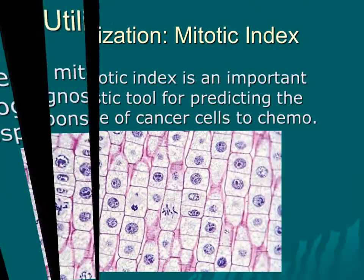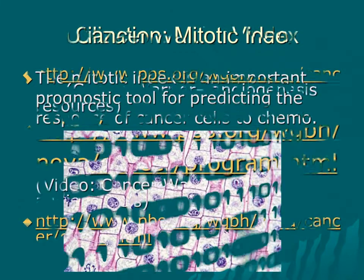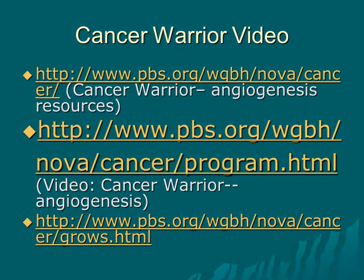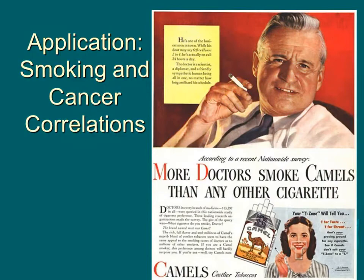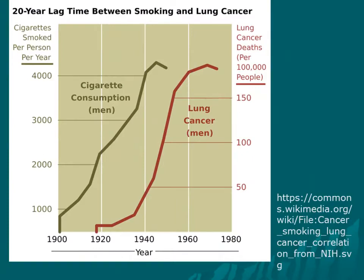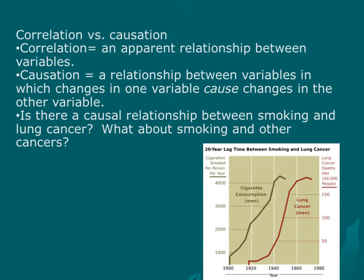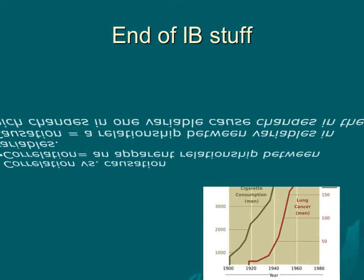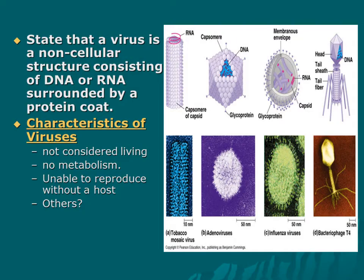Pancreas enzymes: Pancreatic alpha amylase. Pancreatic lipase. Pancreatic proteolytic enzymes: Trypsinogen. Chymotrypsinogen. Ribonuclease and deoxyribonuclease. Proelastase. Trypsin inhibitor.